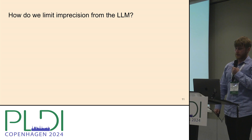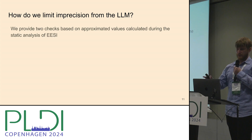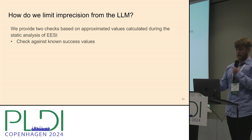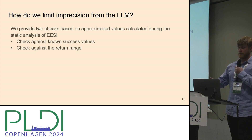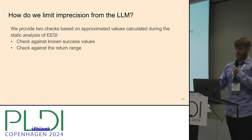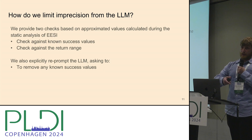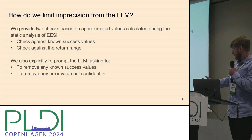With LLMs there's always the issue of hallucination, and we can't make guarantees, but we attempt to limit imprecision with two checks: we check against known success values calculated during static analysis, and we check against the known return range — if the LLM provides an error specification outside the return range, we know it's incorrect. We also explicitly reprompt the LLM to remove any known success values and any error value it is not confident in; these were chosen primarily heuristically because they seem to work.